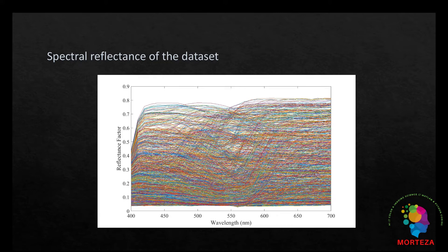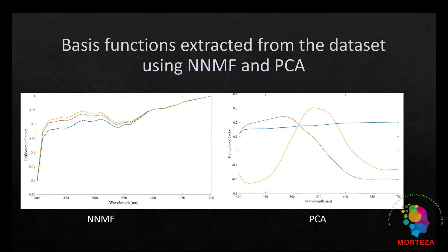Let's first have a look at the basis functions extracted from this data set using NNMF and PCA. The one on the left shows NNMF and the one on the right shows the basis functions extracted using PCA. These are the first three basis functions extracted from our data set. It is worth noting that PCA basis functions have both positive and negative values, but in the case of NNMF there are only non-negative values.